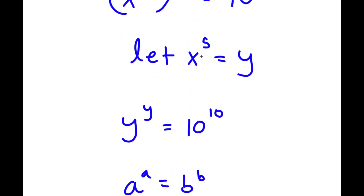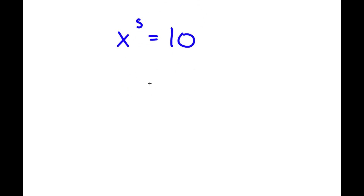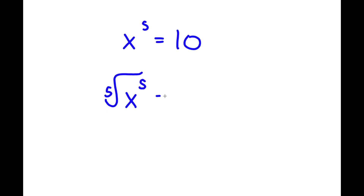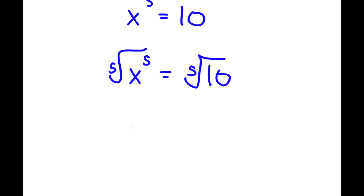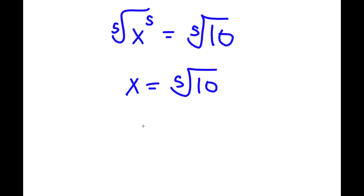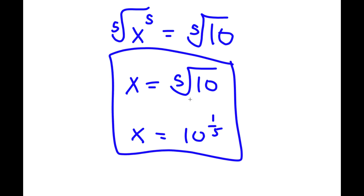Now, remember how we set y equal to x to the power of 5. So this means x to the power of 5 is equal to 10. To solve this, I'm going to take the fifth root on both sides. The fifth root of x to the power of 5 is simply x. So x is equal to the fifth root of 10, which is also written as 10 to the power of 1 over 5. So this is my answer.